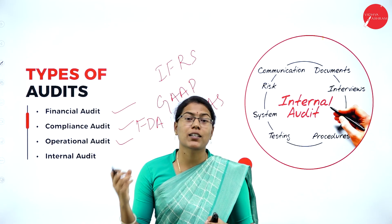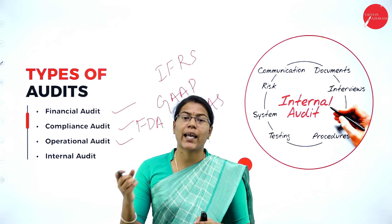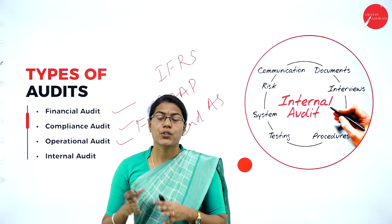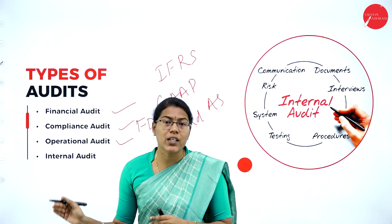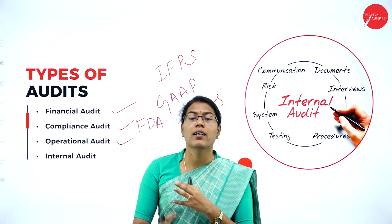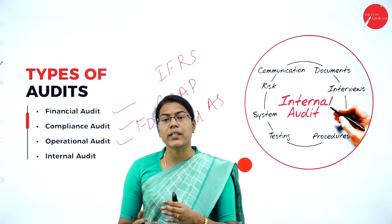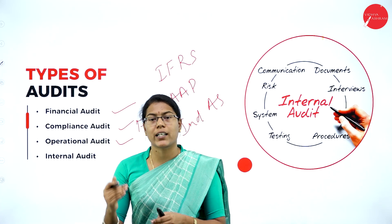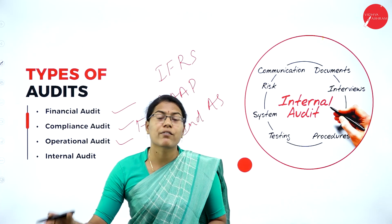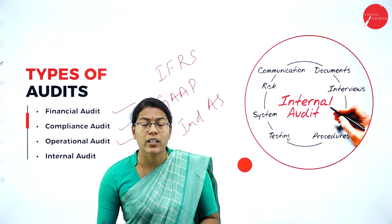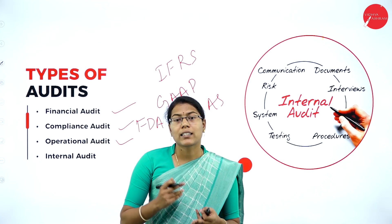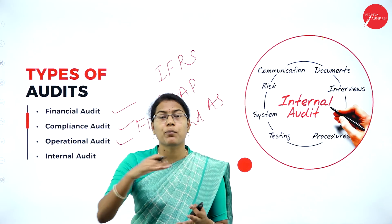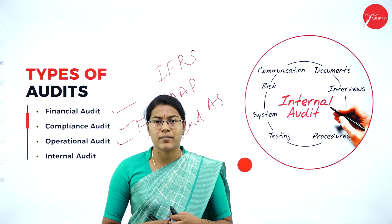Proper operational management helps to avoid unnecessary delays. The operational audit ensures whether the company is performing its operations efficiently or not. For example, in a manufacturing unit, the auditors may check the labor efficiency, machinery use, and the production process.